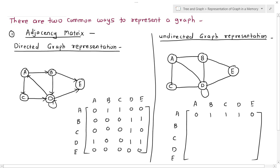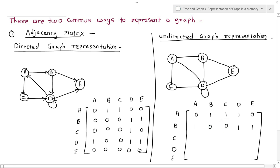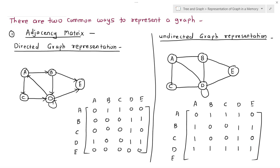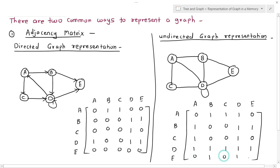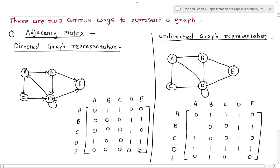Node B has paths to A, D, and E, so those entries are 1 and the rest are 0. Node C has two paths — C to A and C to D — so those are 1 and others are 0. Node D is connected to all other nodes: A, B, C, D, and E. Finally, node E is connected to B and D, so E-to-B and E-to-D are 1 and others are 0. This completes the adjacency matrix representation for both directed and undirected graphs.